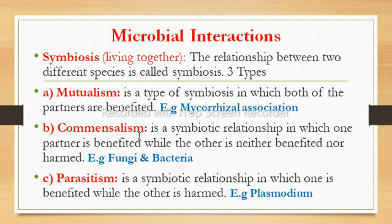Commensalism is a symbiotic relationship in which one partner is benefited while the other is neither benefited nor harmed. For example, some fungi degrade cellulose which many bacteria then utilize — in this case the bacteria are benefited while the fungi are neither benefited nor harmed.